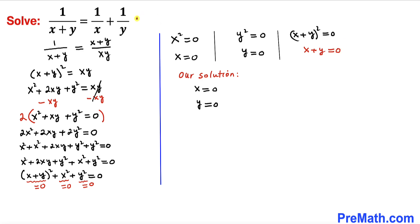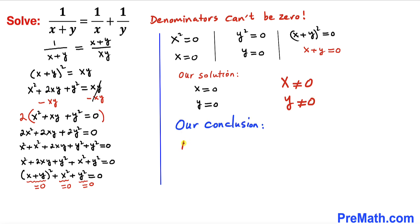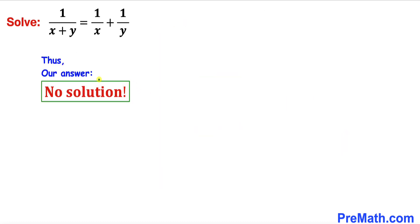But let's go back and look at our original equation. The denominators are x, y, and x plus y. We know that these denominators cannot be 0. So therefore x cannot equal 0 and y cannot equal 0. Thus our conclusion is: there is no solution to this equation.